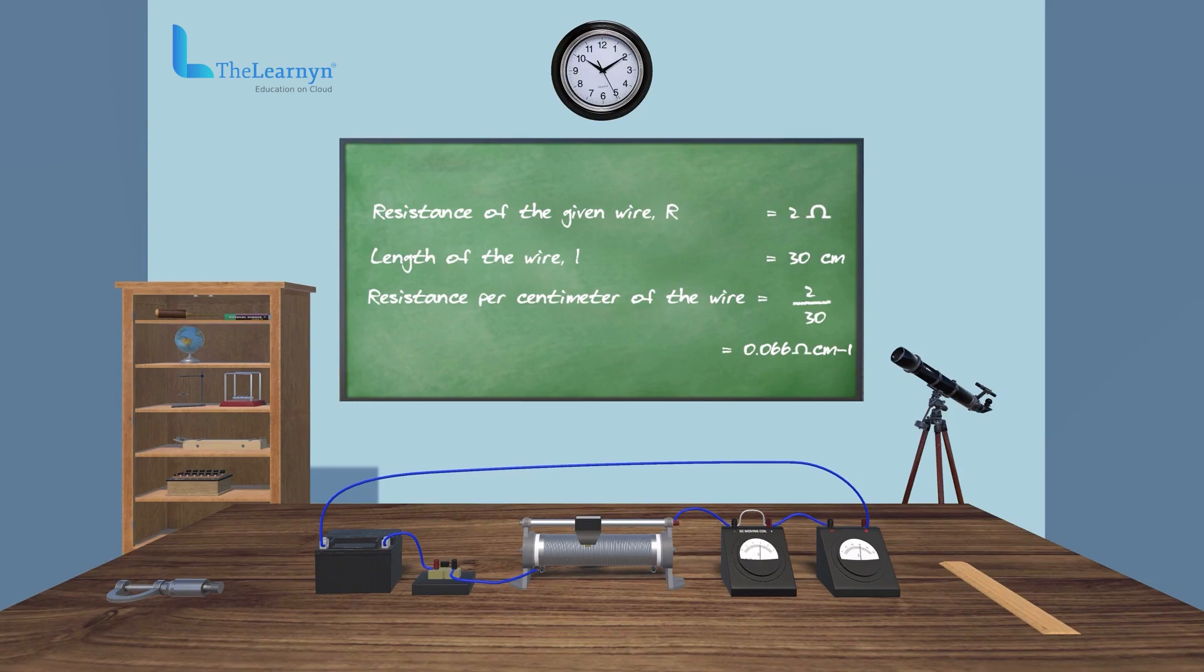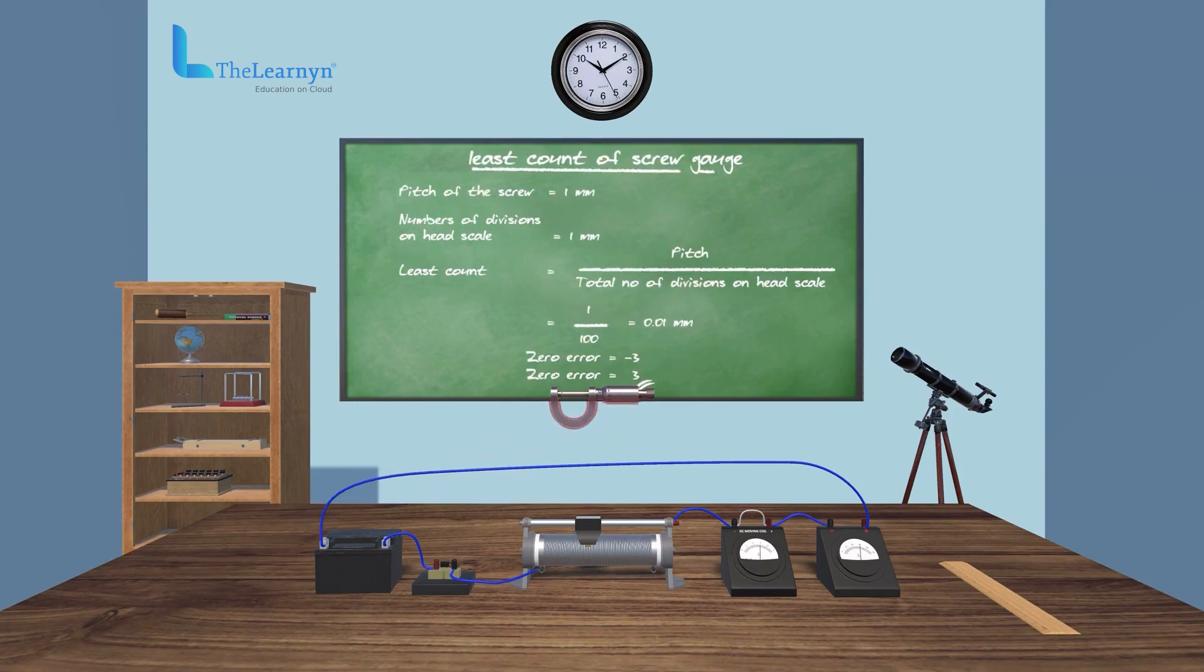Let's calculate least count and zero correction of the screw gauge. Now, remove the resistance wire from the terminals of voltmeter.